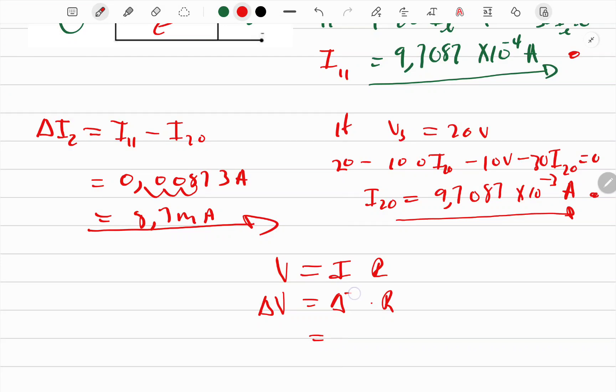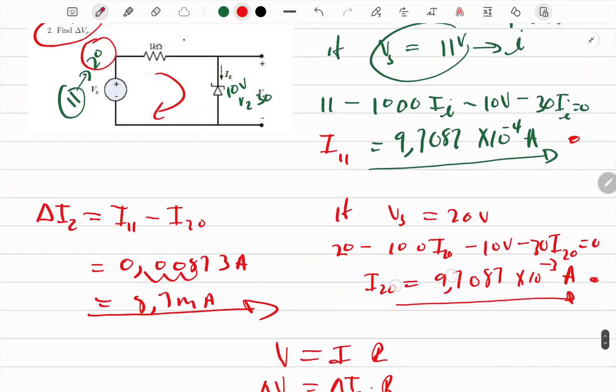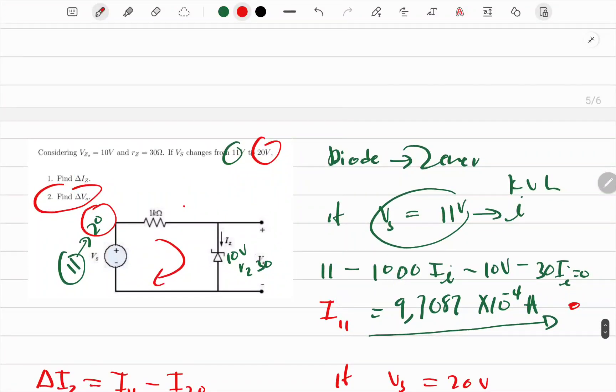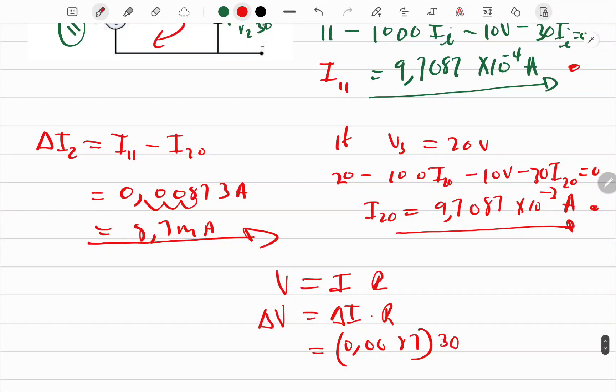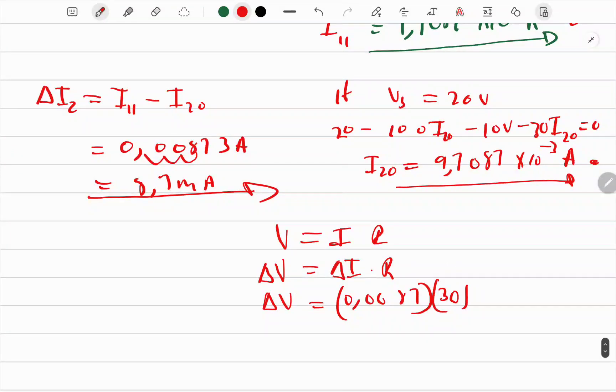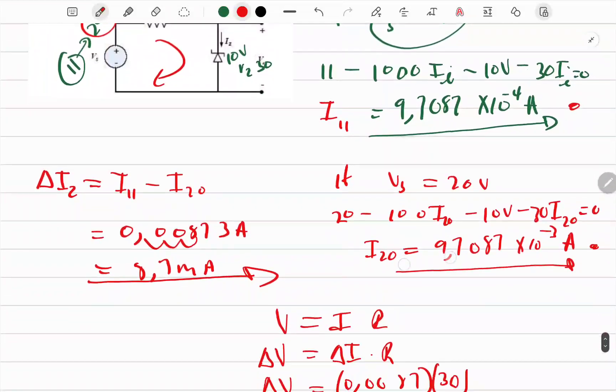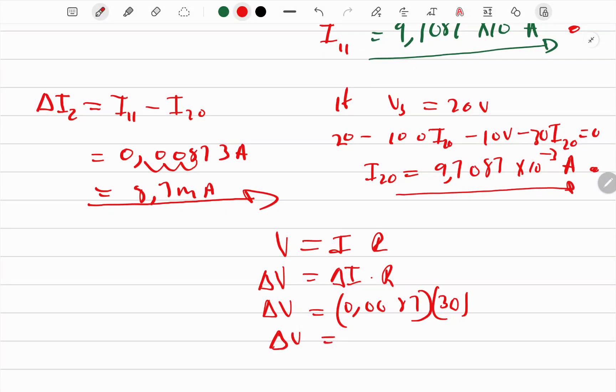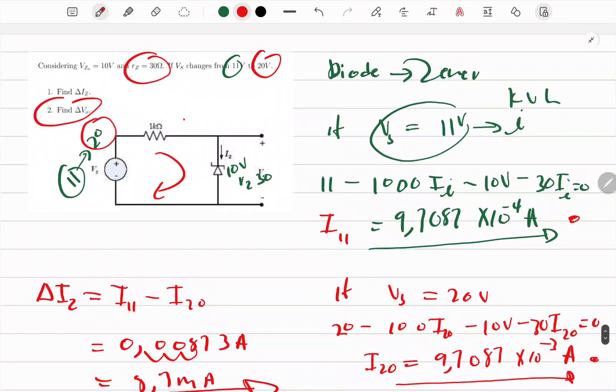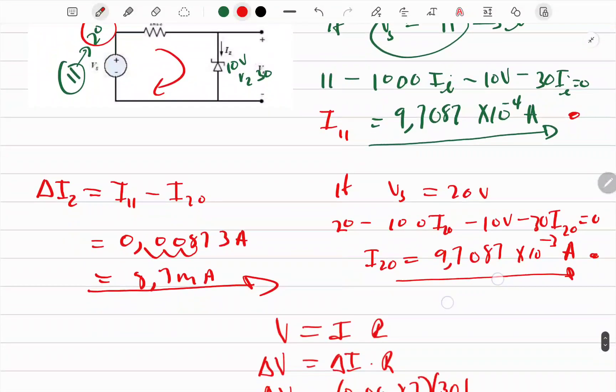So our resistance doesn't change. Our change in V, this is changing current. Our changing current just got to be 0.0087 times our resistance. Let me just go there and confirm, our resistance was 30. Then I come and plug it here, it's 30. Now I'm solving for changing V. Just putting this in the calculator, multiply, and now I'll get 0.2621 volt depending on the number of significant figures that you want. And that is how you work with Zener diodes. Hope you understand it, thank you.